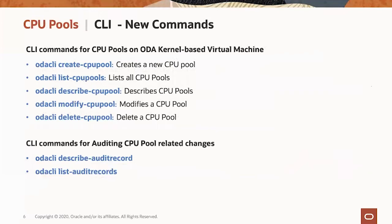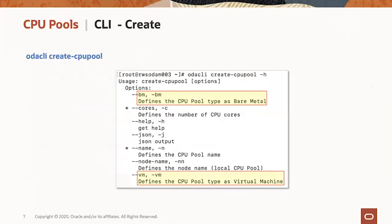We have a new set of CLI commands. The top five allow you to create, list, describe, modify, and delete CPU pools. The two bottom commands are for auditing CPU pool-related changes. A database administrator can use these to gather historical information about changes to a specific pool — whether VM or bare metal — or even a specific database. Here's the help for the create CPU pool command, highlighting the dash-BM and dash-VM parameters to set up either a bare metal or virtual machine pool.